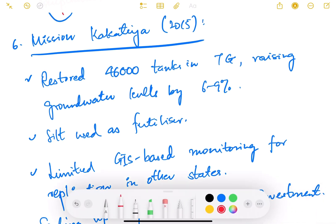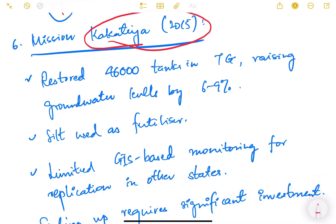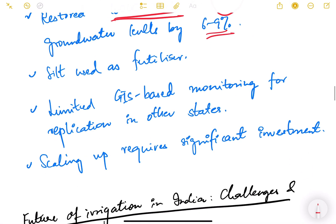Then the next one is Mission Kakatiya 2015 of Telangana state. We have seen this, basically restored 46,000 tanks in Telangana raising groundwater levels by 6 to 9 percent. They rejuvenate and restore existing tanks. The silt which comes out after desiltation is used as fertilizer because it is rich in nutrient.